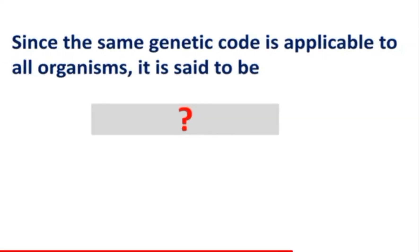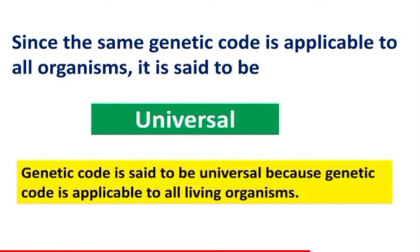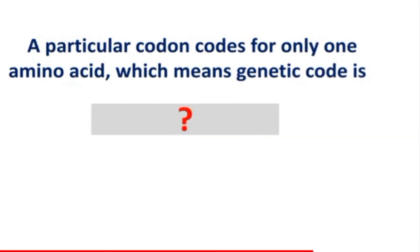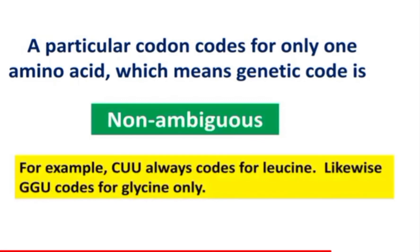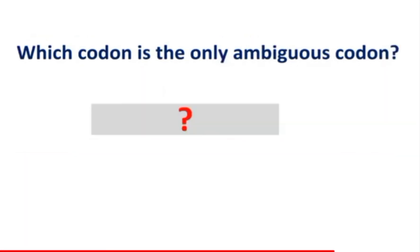Since the same genetic code is applicable to all organisms, it is said to be what? A particular codon codes for only one amino acid — which means the genetic code is what? Which codon is the only ambiguous codon?